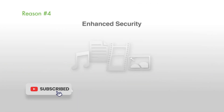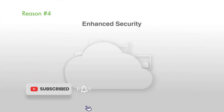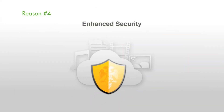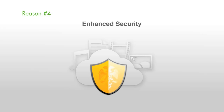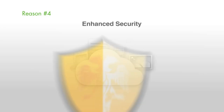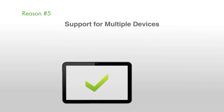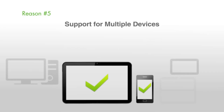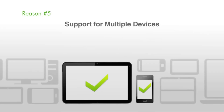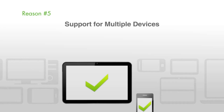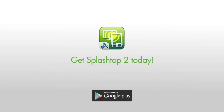Reason number four: enhanced security. Splashtop 2 with Anywhere Access Pack uses the same encryption algorithms and technologies as the biggest banks in the world. Rest assured that your data will be transmitted securely whenever and wherever you connect. Reason number five: support for multiple devices. With Splashtop 2's Anywhere Access Pack, you can use the same user account for multiple Splashtop-enabled devices to connect to your Mac or PC anytime, anywhere, on any device. Get Splashtop 2 on Google Play today.